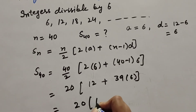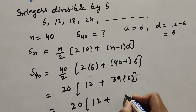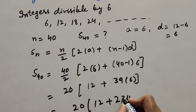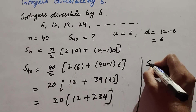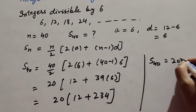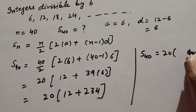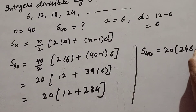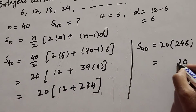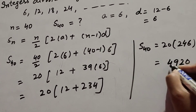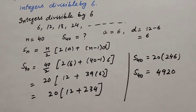This equals 20 into 12 plus 39 multiplied by 6, which equals 234. So the sum of 40 terms equals 20 into 12 plus 234, which equals 20 multiplied by 246. We get the answer 4920. So the sum of the first 40 terms of the AP is 4920.